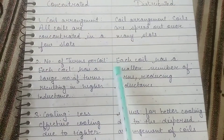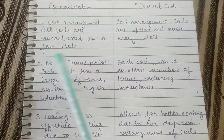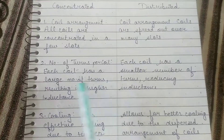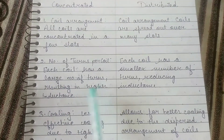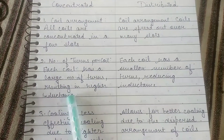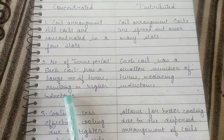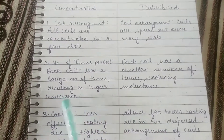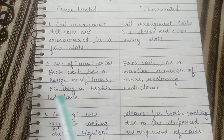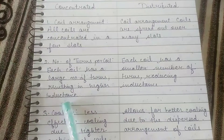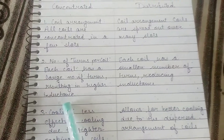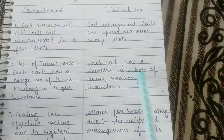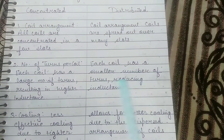In concentrated winding, each coil has a large number of turns, resulting in higher inductance. Inductance is the property of an electrical conductor that opposes any change in the current flowing through it. But in distributed winding, each coil has a smaller number of turns, reducing inductance.